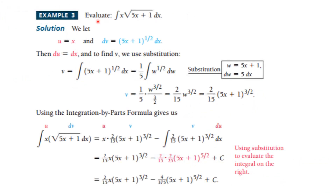Here's another one. We're to evaluate the indefinite integral of x times the square root of (5x + 1) dx. In this case, we're going to let u equal x and everything else has to be dv, so dv is (5x + 1)^(1/2) dx. Then du is dx, and I have to integrate dv — this is an integration by substitution.